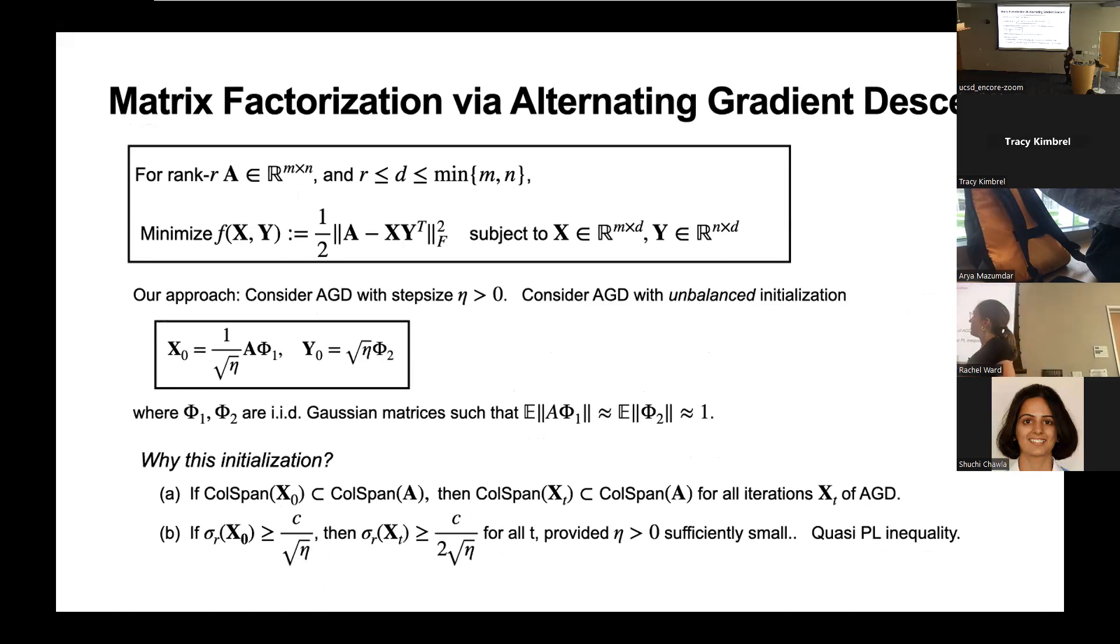The other key observation we made was how to initialize to get a simple analysis of gradient descent for matrix factorization. And what we found was that a step size dependent initialization simplifies things a lot. So if we look at matrix factorization, we suppose that the matrix is rank R and R is less than or equal to D, the dimension of the factor. So we're allowing for overparameterizing the problem. When D is greater than R, we're increasing the amount of overparameterization. If we initialize in an unbalanced way where X naught and Y naught are multiplied by one over the square root of the step size times the step size—this is kind of weird, this unbalanced initialization—and we initialize X naught in the column span of A where phi 1 and phi 2 are Gaussian matrices. This is like an interesting initialization between spectral initialization and purely random initialization. But it's no more computationally involved than running a step of gradient descent. You have to multiply by A anyway.